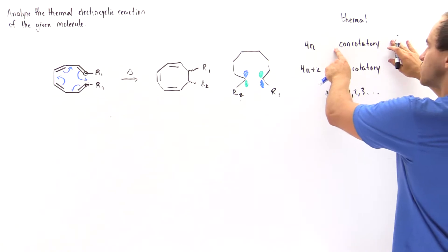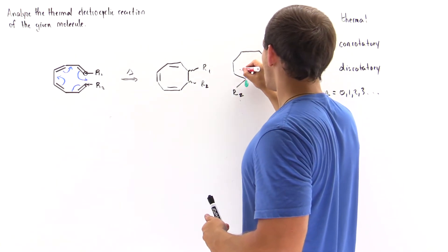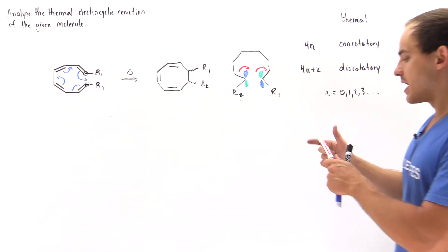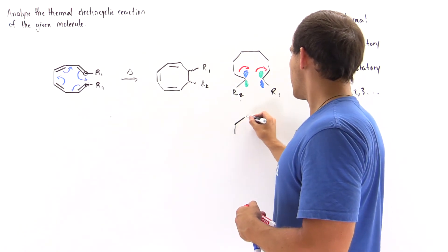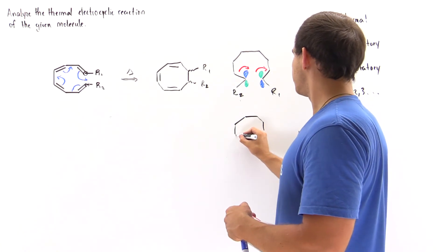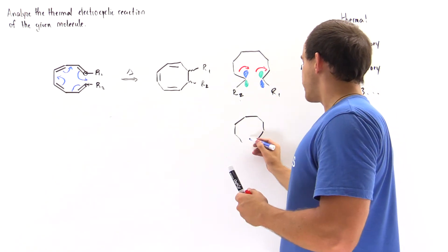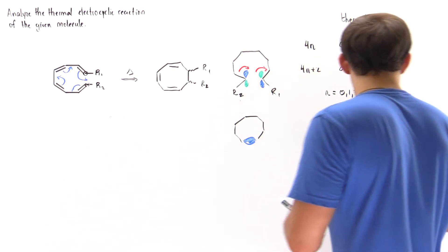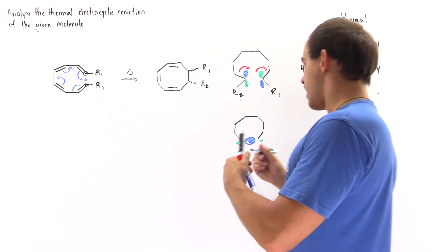So because our rotation is conrotatory, they rotate in the same direction. Let's say they rotate clockwise. If they rotate clockwise, both of these orbitals have to rotate clockwise. And so when they actually rotate, we form the following molecule. Basically the blue regions, the negative regions, will overlap and we produce this sigma bond, and our green regions will become much smaller and will point in the opposite direction.